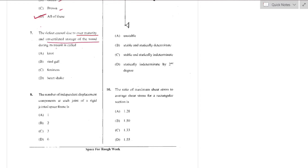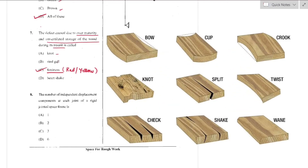Question number 7: The defect caused due to over-maturity and unventilated storage of wood during transit is called foxiness — option C is the right answer. It may appear red or yellow in color. Knots are dark-colored stains; rind galls are curved swellings where branches are improperly removed; hard shakes are cracks which separate wood fibers partly or completely.